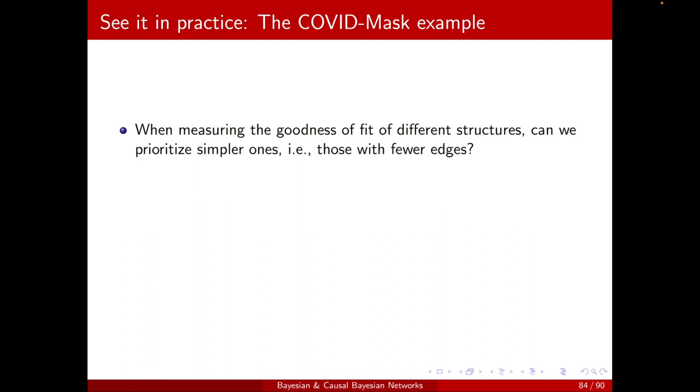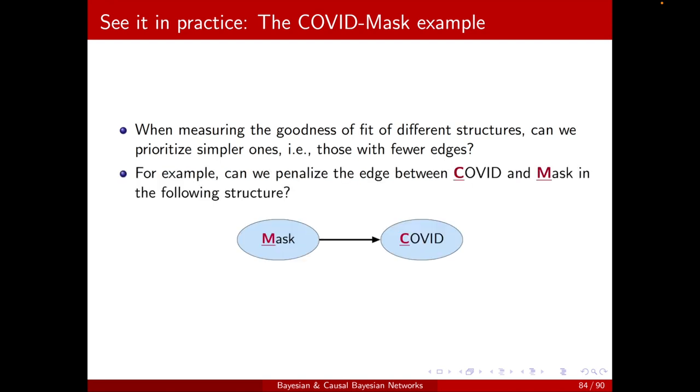We already saw a couple of scores, the likelihood and the Bayesian, to measure the goodness of fit of a structure. Now, can we somehow prioritize simpler structures, meaning those with the fewer number of edges? For example, can we penalize the edge between COVID and mask in the following structure? Then, obviously, a simpler model, when there is no link between them, will be prioritized.